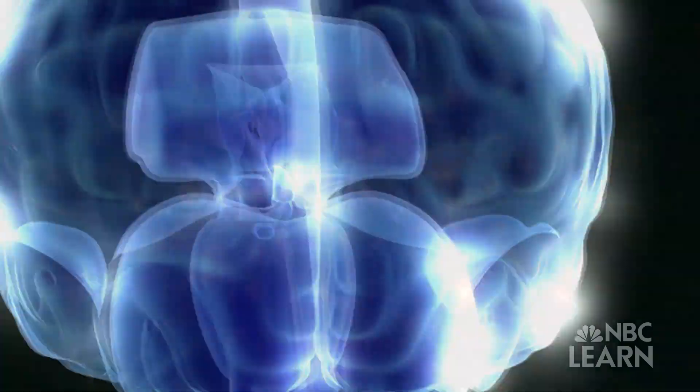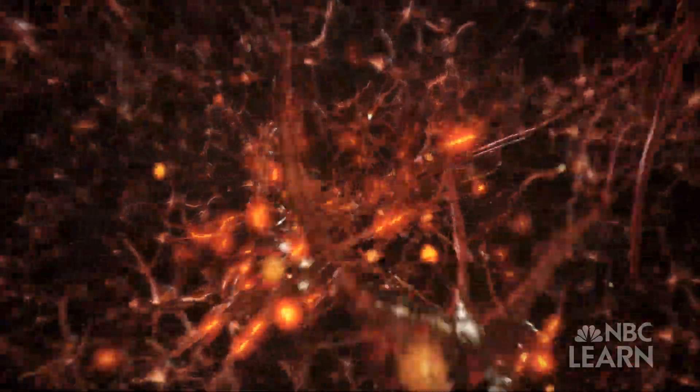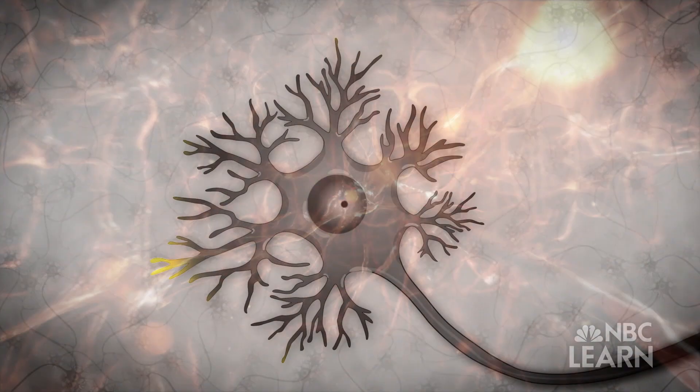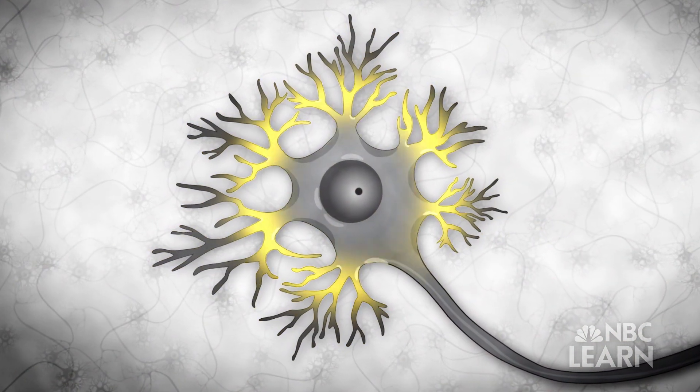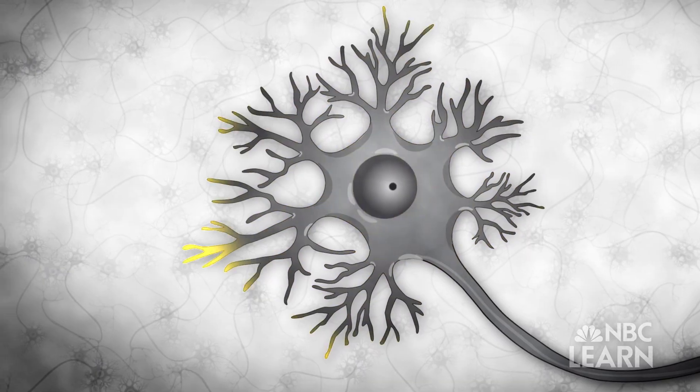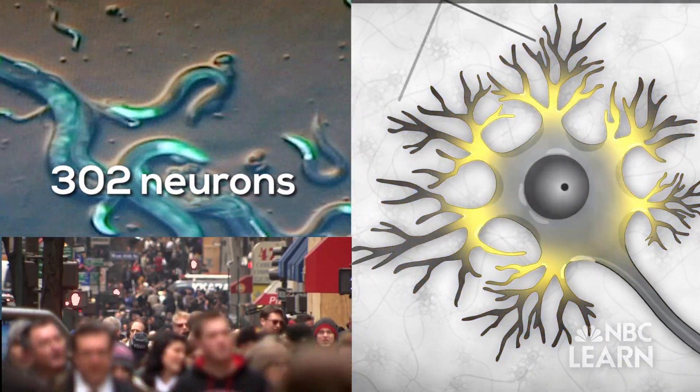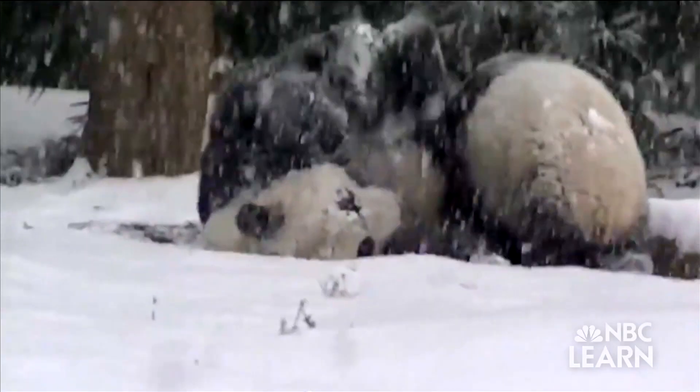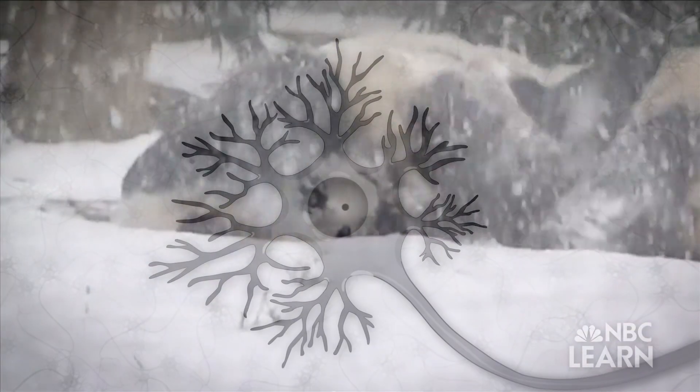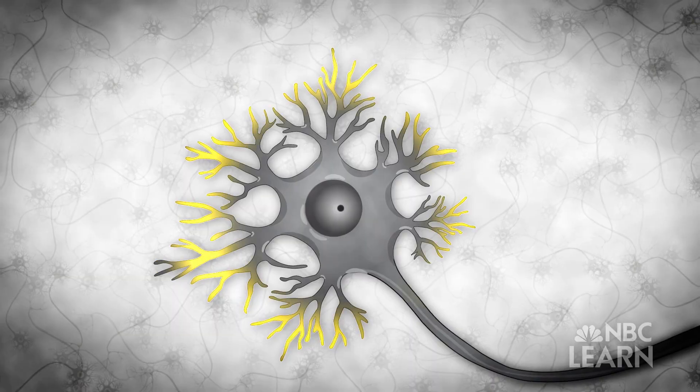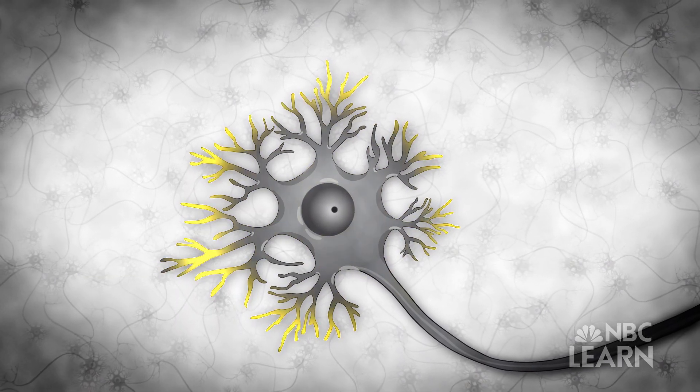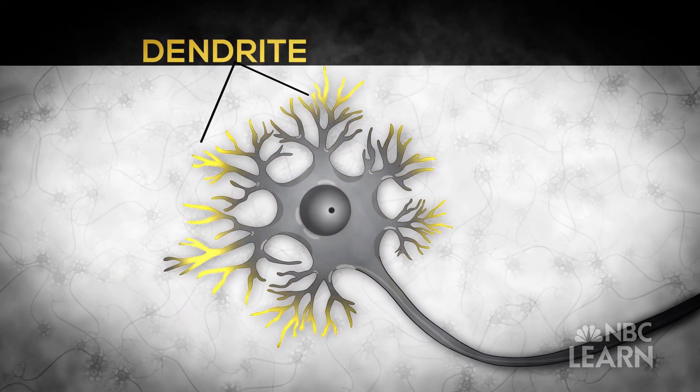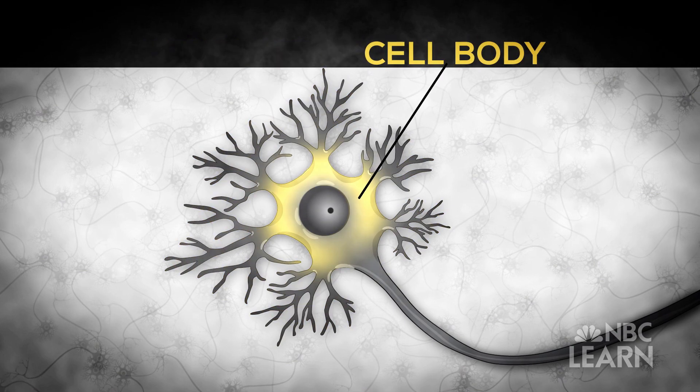To process, organize and store all the information, the brain employs cells called neurons. Neurons are basic to all brains, from roundworms to humans. When a puppy sniffs out a new playmate or a panda discovers snow, the information in the form of electrochemical signals is received by the neuron's antenna-like dendrites, processed in the cell body, and then passed along through the axon to the next cell.